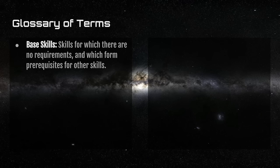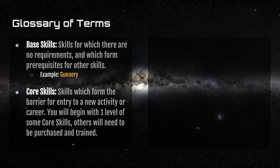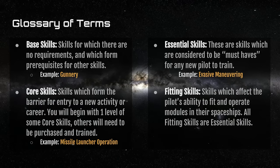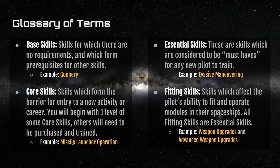Base skills are skills for which there are no requirements and which form prerequisites for other skills — things like Gunnery. Core skills are skills without which you can't do a specific thing, such as Missile Launcher Operation: without it, you can't fit and operate a missile launcher. Essential skills are considered must-haves for any new pilot, such as Evasive Maneuvering — without it, you're not very mobile in space. Fitting skills affect your ability to fit modules to your ship, like engineering classes your pilot needs before doing pre-flight checks. Examples include Weapon Upgrades and Advanced Weapon Upgrades.